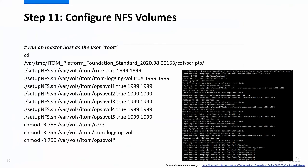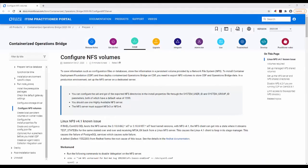Step 11 is to configure NFS volumes. Execute the commands shown on the screen on the master host to configure NFS volumes on the master. For information on how to configure NFS volumes in production, please go to the URL shown on the screen.